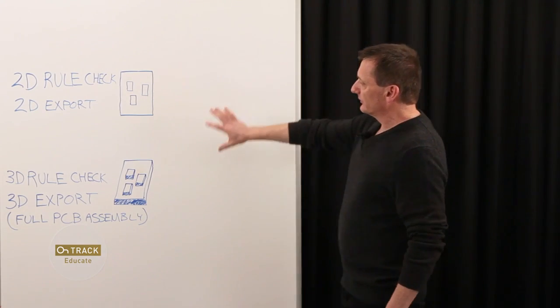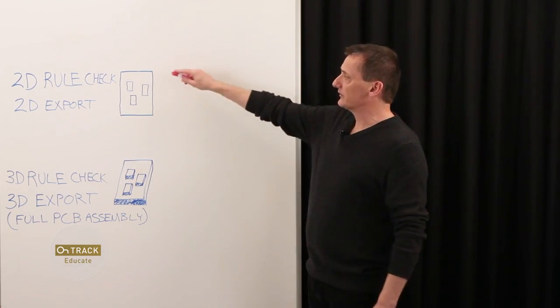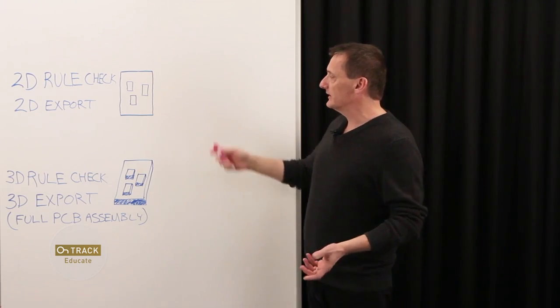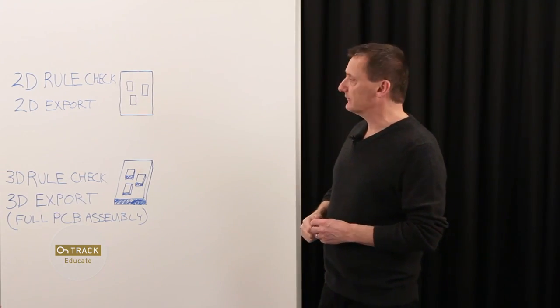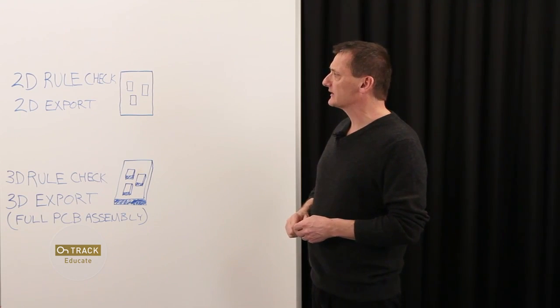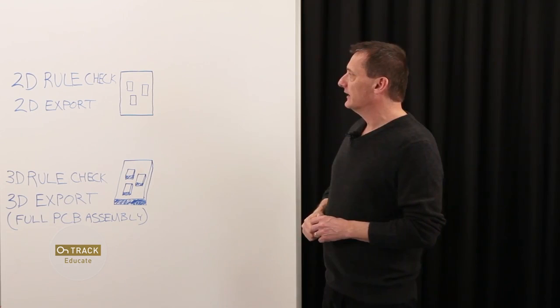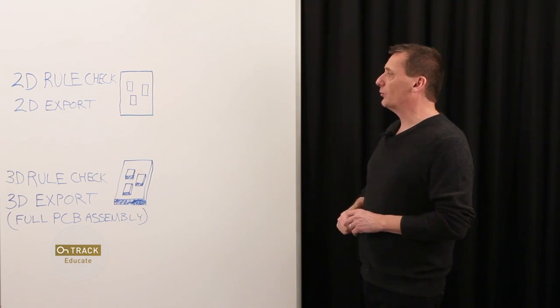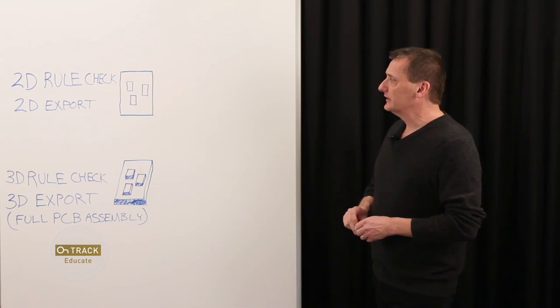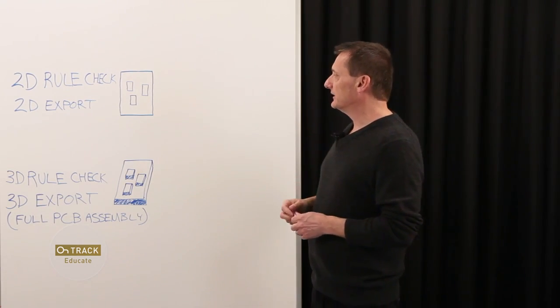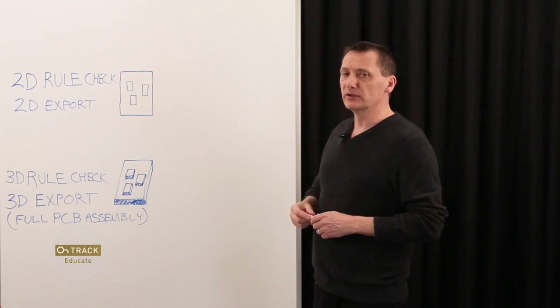I have here two illustrations. One is the traditional 2D approach, where the designer creates everything in a 2D environment and then exports out CAD files to the mechanical team. That's been in use for quite a while. Typically, the issues that are discovered by the mechanical team have to get fixed, so there's a lot of going back and forth.